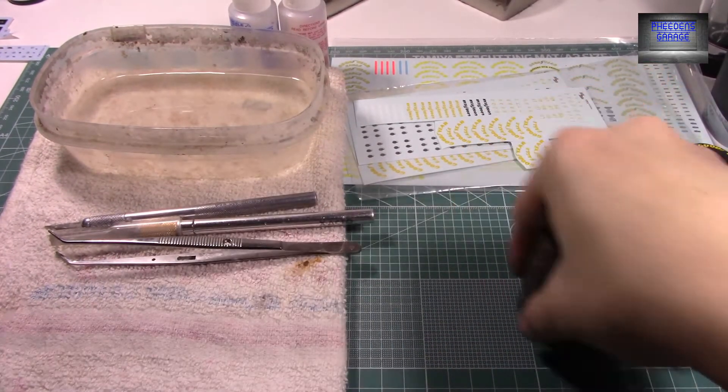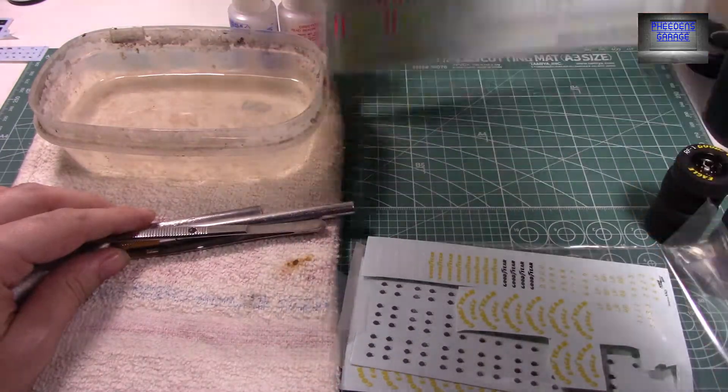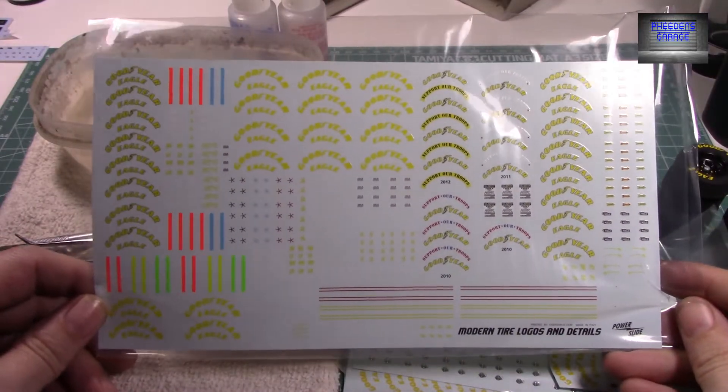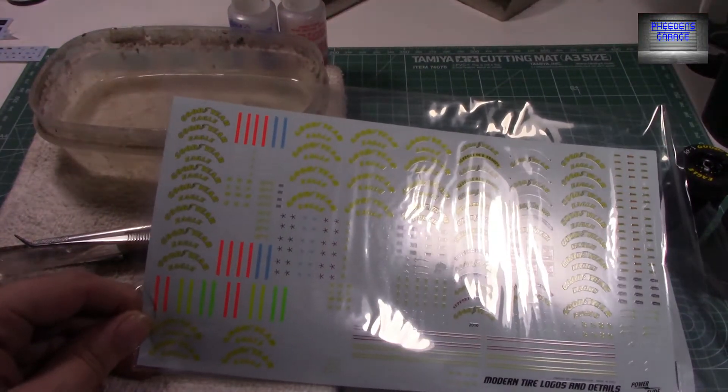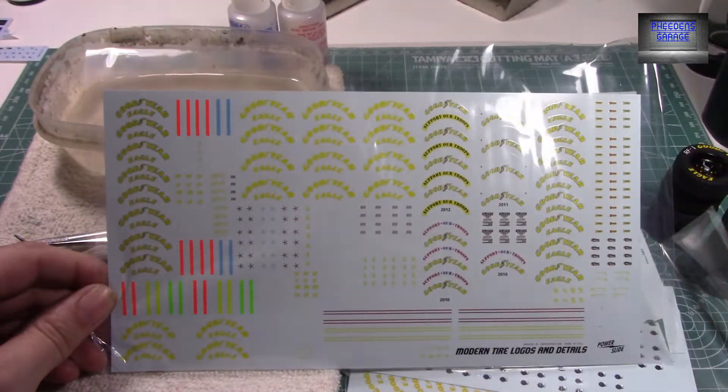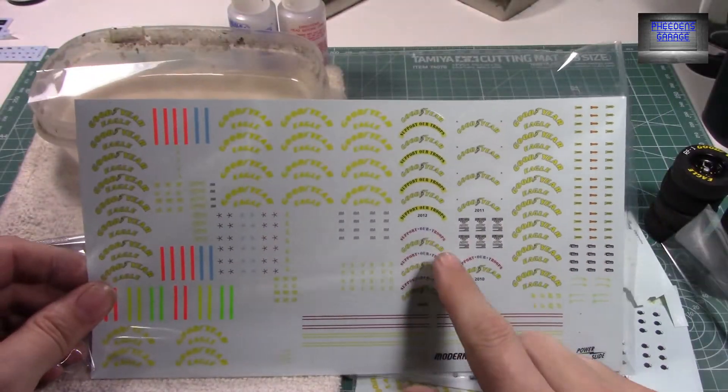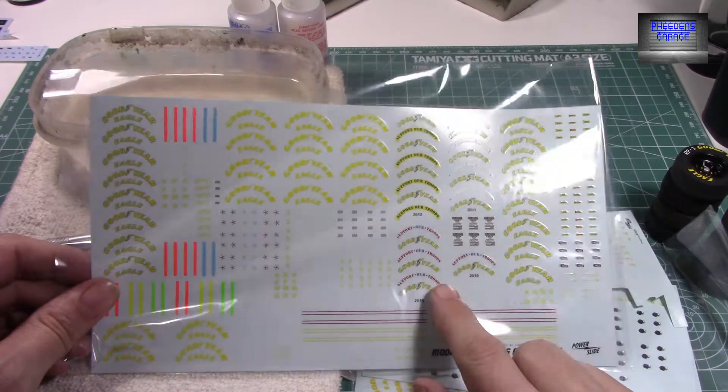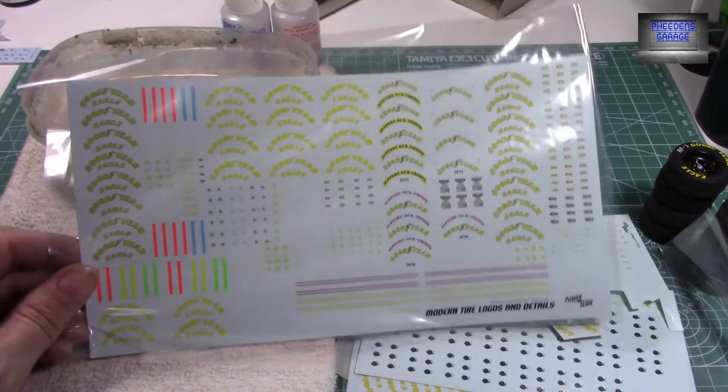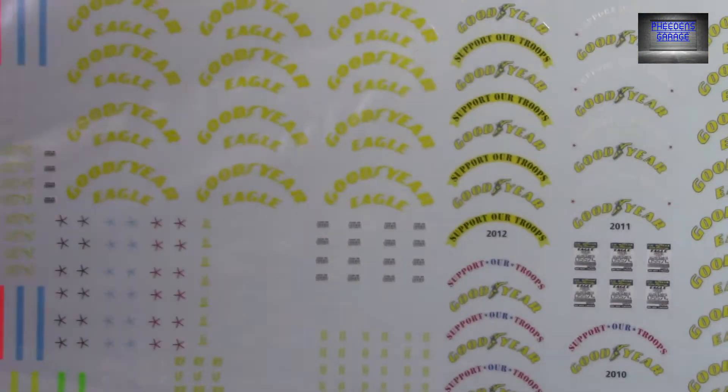Now, lucky for us, there are some nice decals on the market. This is a really nice sheet. This is from the Power Slide decal sheet from Mike's Decals. This gives you a wide range, gives you a ton of tire markings. You have a couple of years to support our troops. This sheet is technically good up until 2014, but they're still kind of running the same.